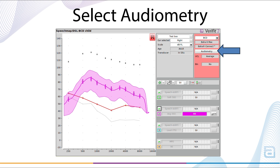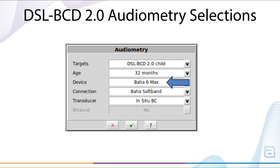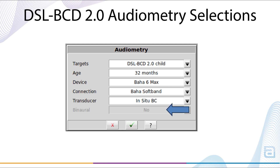To set DSL-BCD 2.0 prescriptive target parameters and enter audiometric data, select Audiometry. With the addition of DSL-BCD 2.0 prescriptive targets, the Audiometry menu in Verifit 2's SpeechMap now has the following selections: targets, age, device, connection, transducer, and binaural.